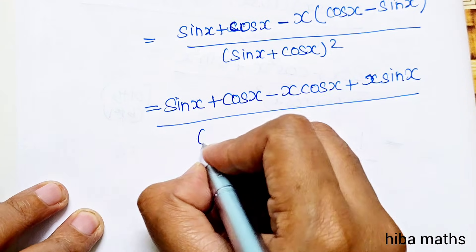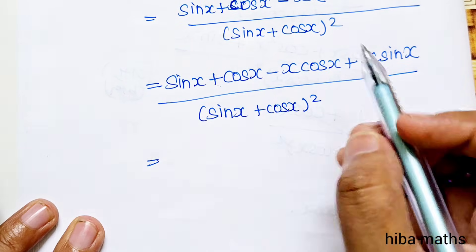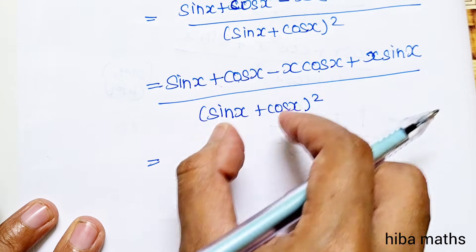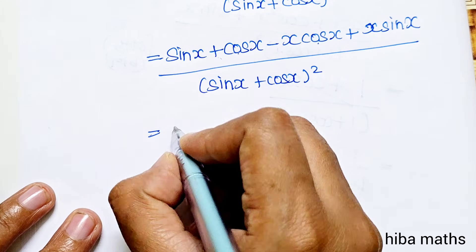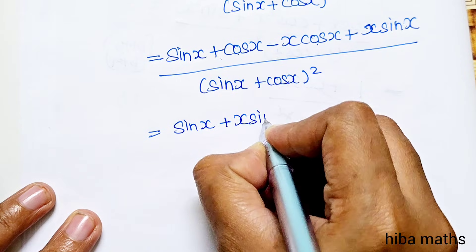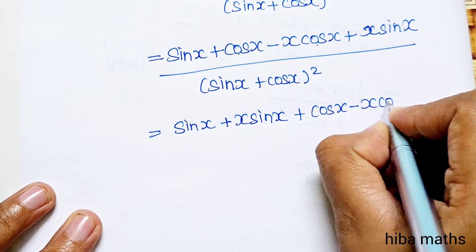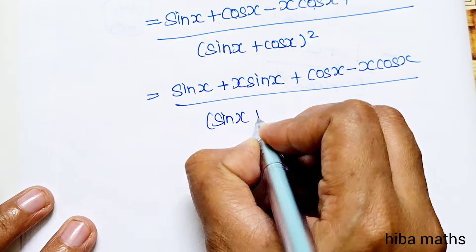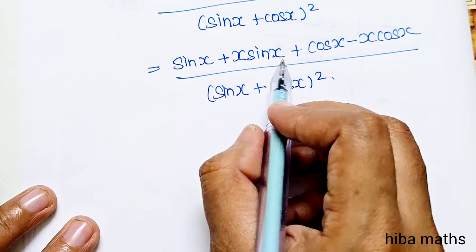So we have: sin x plus cos x minus x·cos x plus x·sin x, divided by (sin x plus cos x) whole square. Now grouping: the sin x terms together and cos x terms together. There are two sin terms and two cos terms. We can shuffle and rearrange these terms.